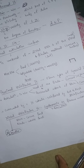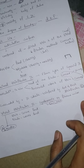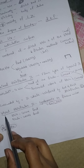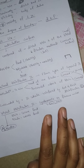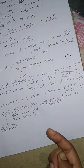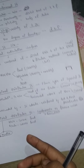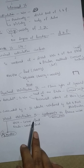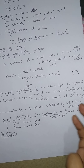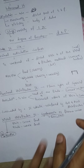The anterior and posterior tibiofibular ligaments and the interosseous membrane provide support to the distal tibiofibular joint. The distal tibiofibular joint is an extremely strong articulation because it is a syndesmosis type of joint, which is very strong.